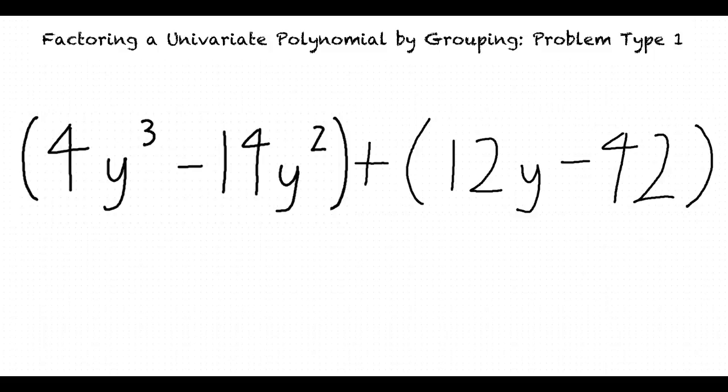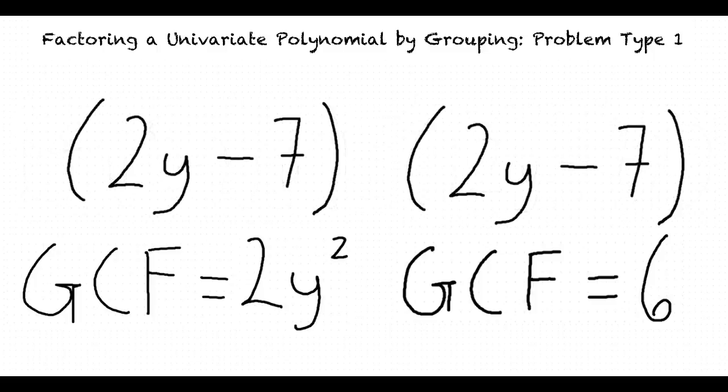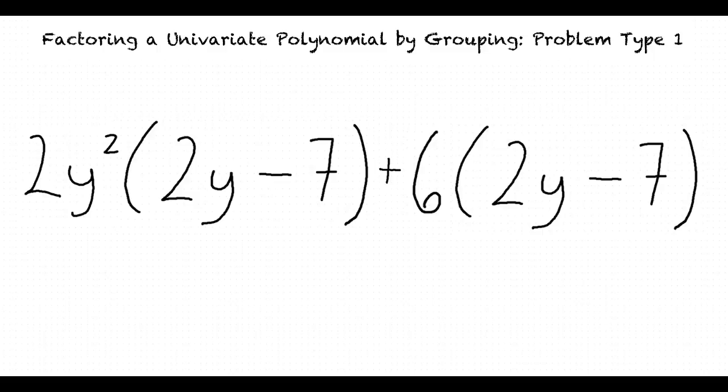Then we find the GCF of each binomial, 2y squared and 6, and divide the expression by their GCFs. Writing the GCF outside the parentheses of each binomial to yield 2y squared times 2y minus 7 plus 6 times 2y minus 7.